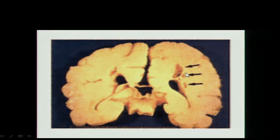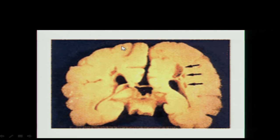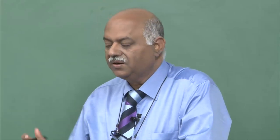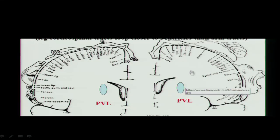This is how periventricular leukomalacia looks on the cut brain surface — you can see the damage here. It is a soft brain with areas of gliosis and may involve the cortex, basal ganglia, or thalamus, depending on the insult. Depending on the area affected, the child develops motor, sensory, basal ganglia, or cortical deficits and epilepsy. The PVL means the fibers running through that area get cut and the connection is lost.